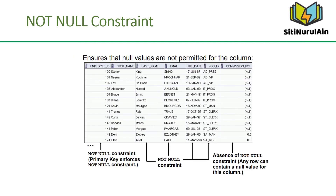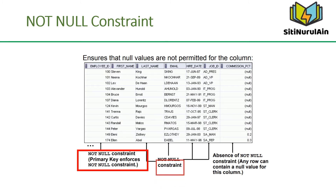The NOT NULL constraint ensures that a column contains no null values. Columns without the NOT NULL constraint can contain null values by default. NOT NULL constraints must be defined at the column level. In the EMPLOYEES table, the EMPLOYEE_ID column inherits a NOT NULL constraint because it is defined as a primary key. Otherwise, the LAST_NAME, EMAIL, HIRE_DATE, and JOB_ID columns have the NOT NULL constraint enforced on them.